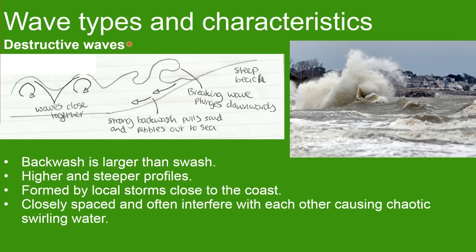Next we're looking at destructive waves. In destructive waves the backwash is larger than the swash. They have high steep profiles, and the breaking wave plunges downwards and pulls back down the sediment. They're formed by local storms close to the coast, which gives them a swirling sensation because of the chaotic water. You can see here the wave is breaking and plunging downwards on the coast.